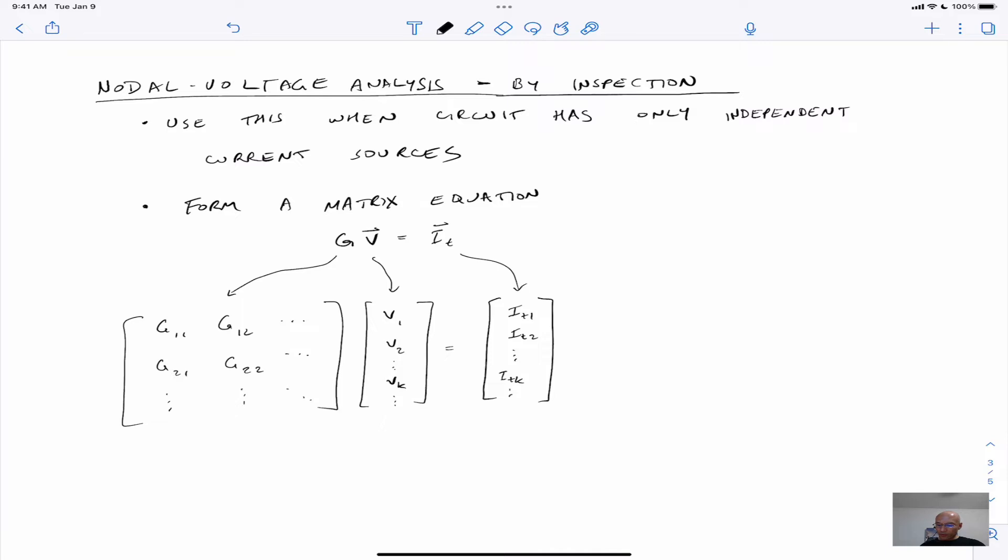So the whole goal is to form a matrix equation, like we may typically do for node voltage analysis. There's G, a conductance matrix, V, a vector of voltages we're trying to solve for, and then I_T, a vector of total currents.